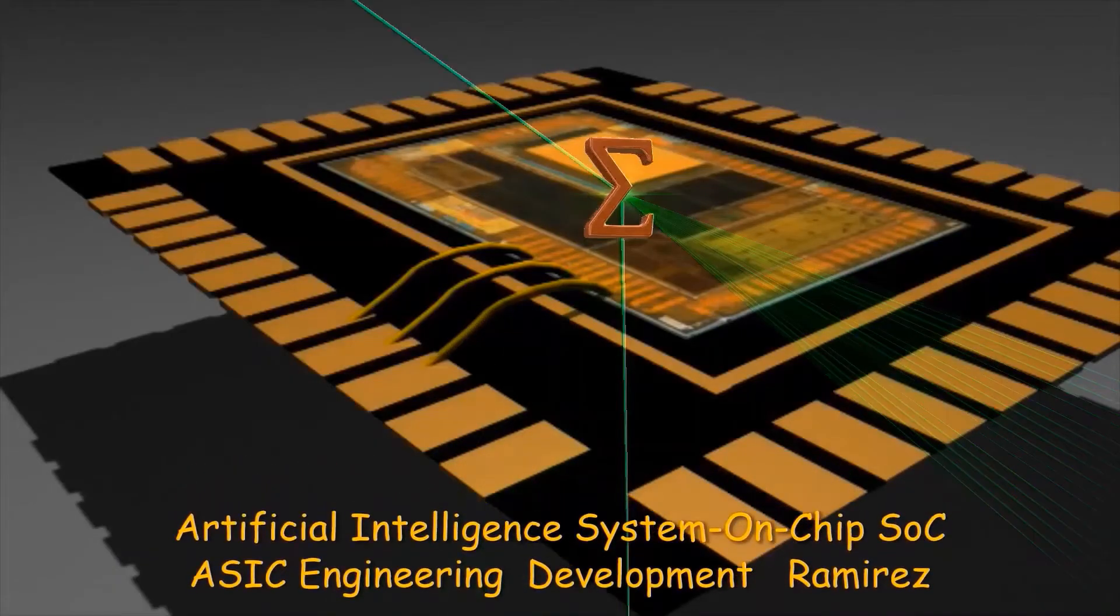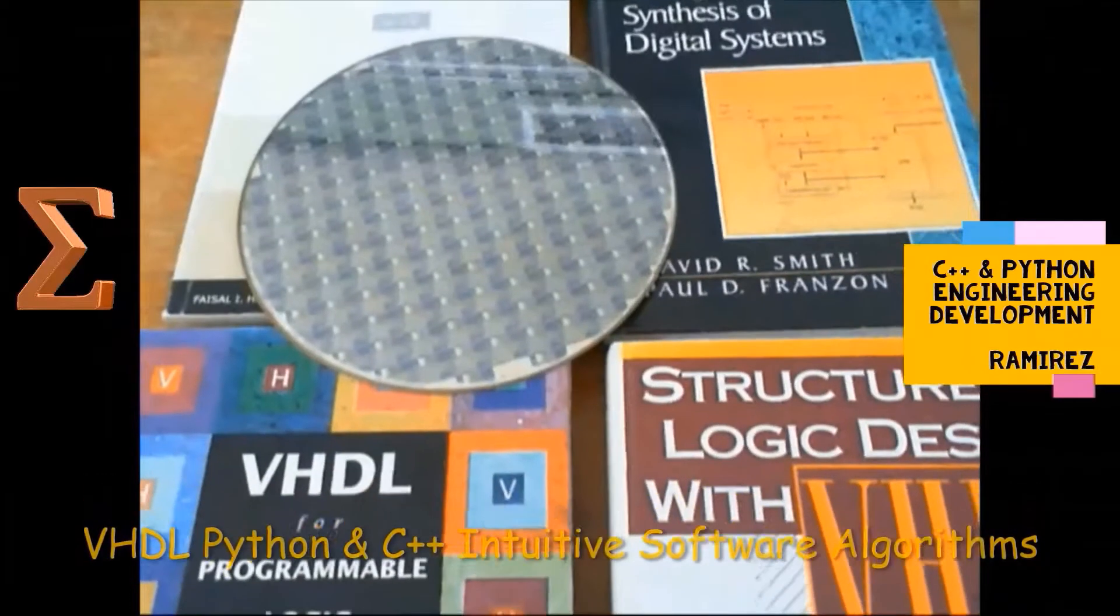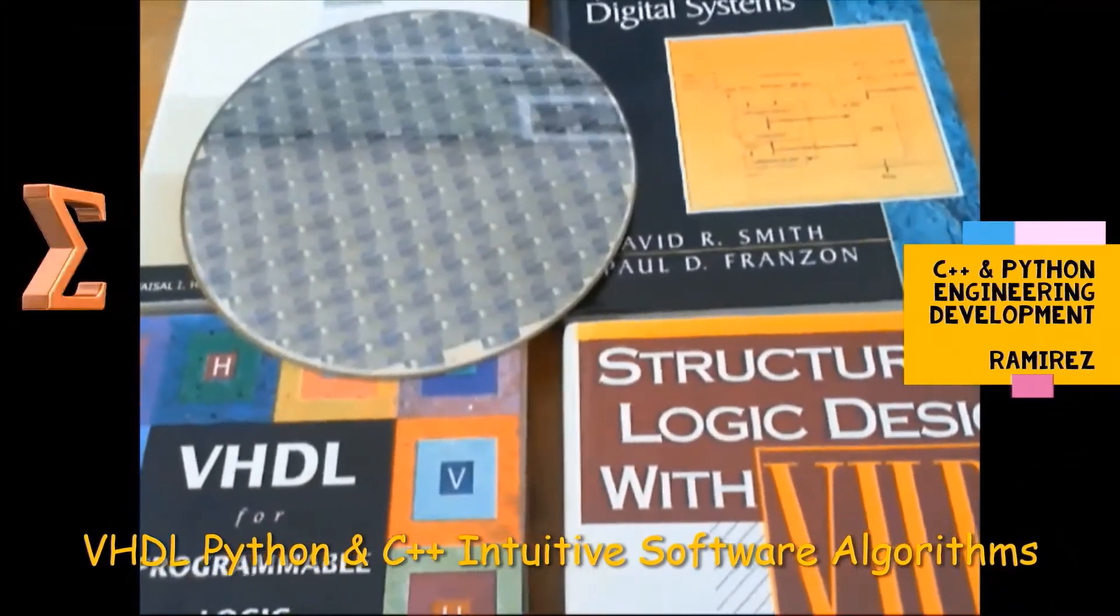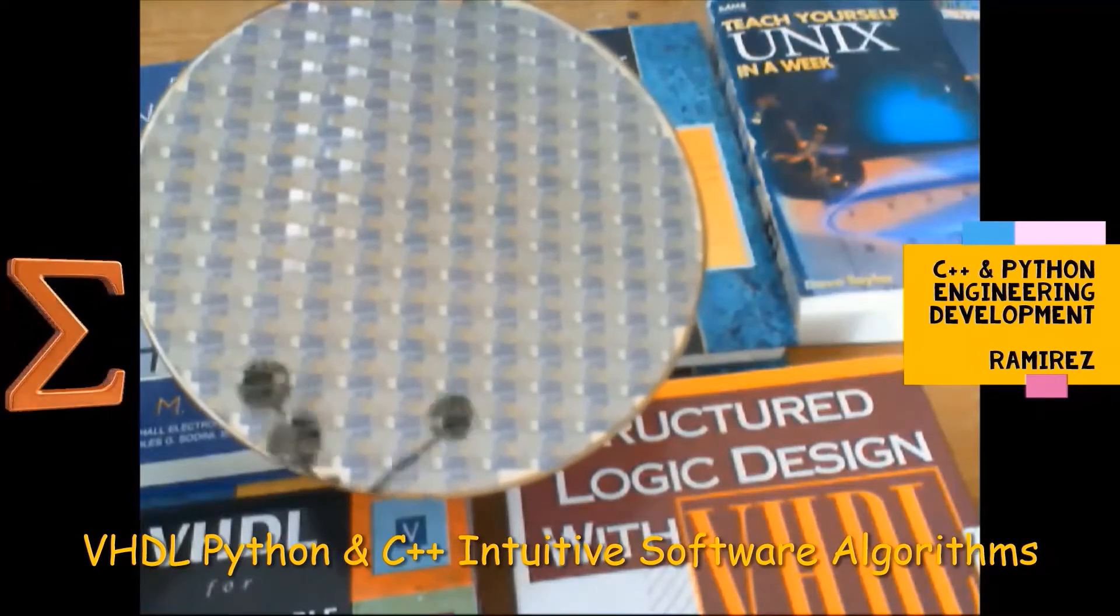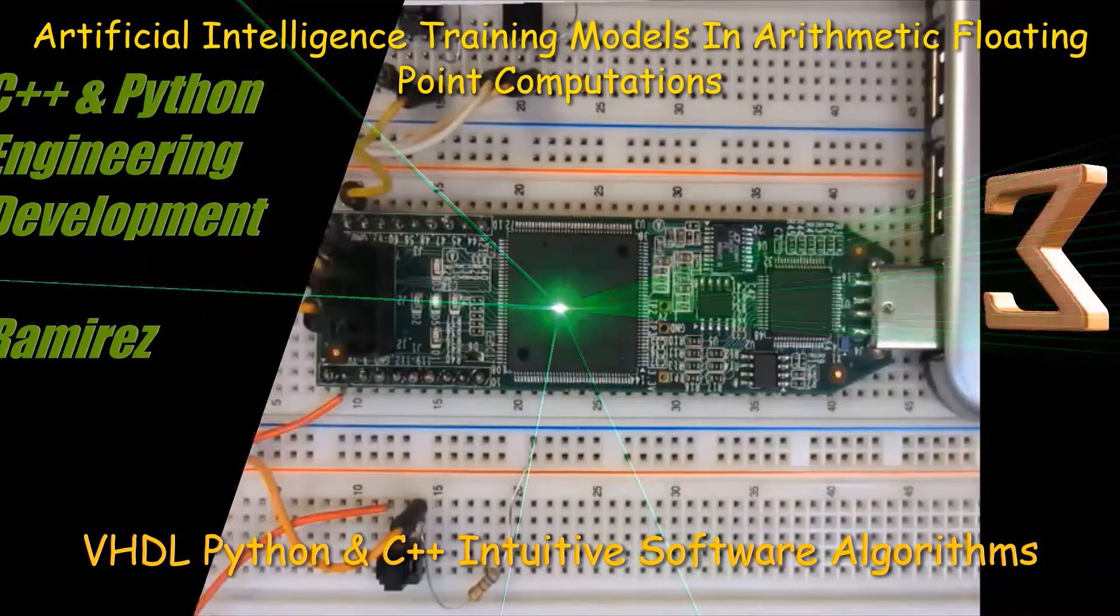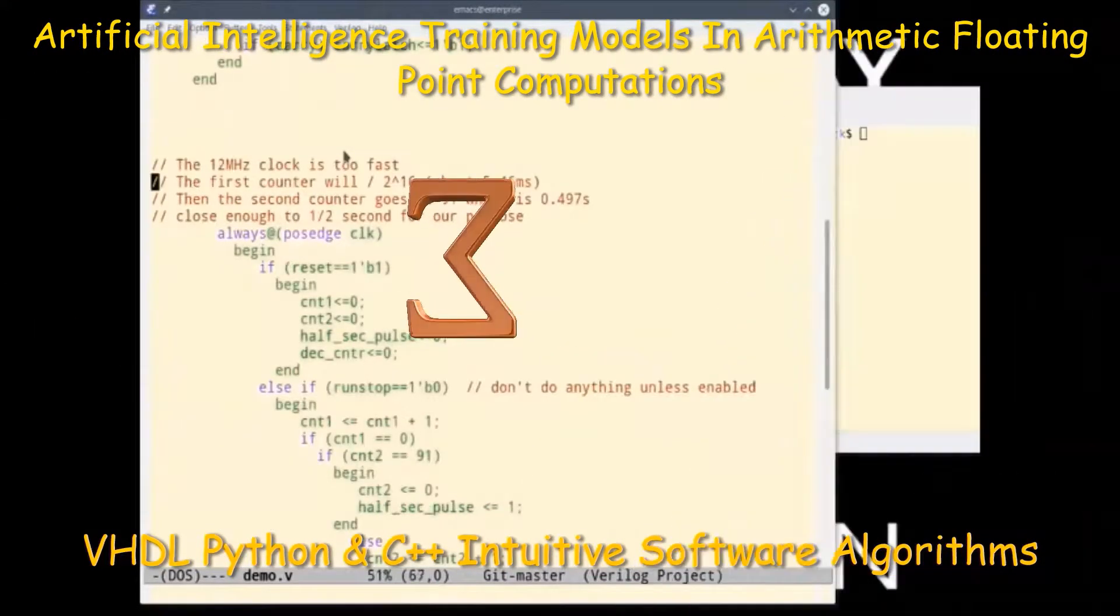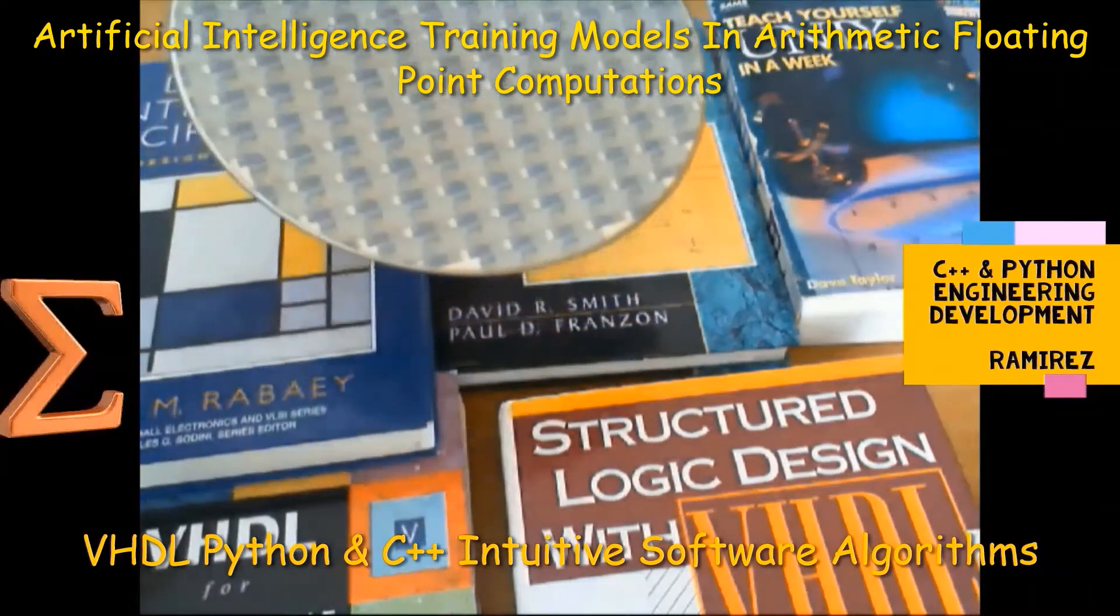The wafers are diced into dies. The yield of good dies in this case was 17 of over 20, which is approximately 85%. These good dies are then bonded into packages and tested one more time.